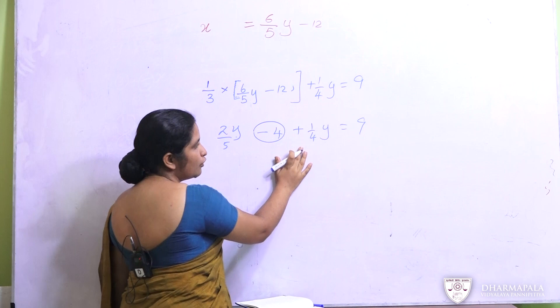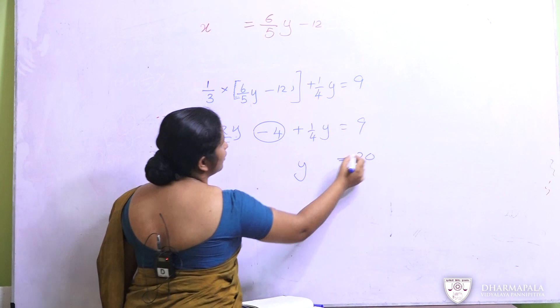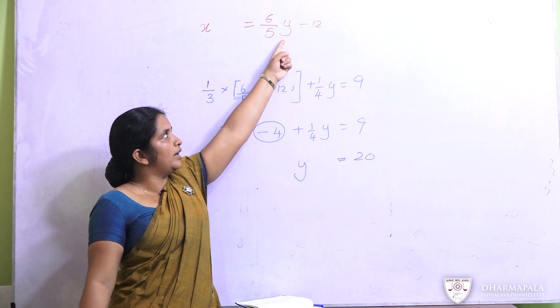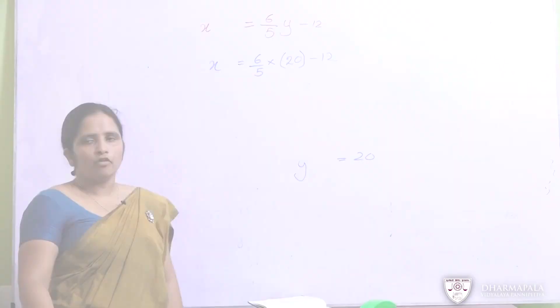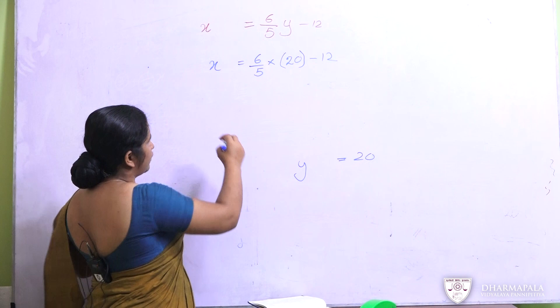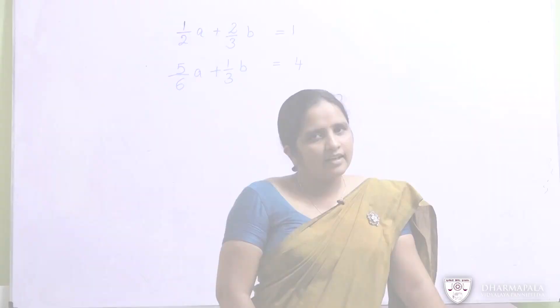The value of y is 20. Now substitute the value of y into our previous equation for x. When you substitute y equals 20 you get the value of x. Finally you get the answer for x as 12. So y equals 20 and x equals 12. We have now learnt two ways to solve simultaneous equations with fractional coefficients.